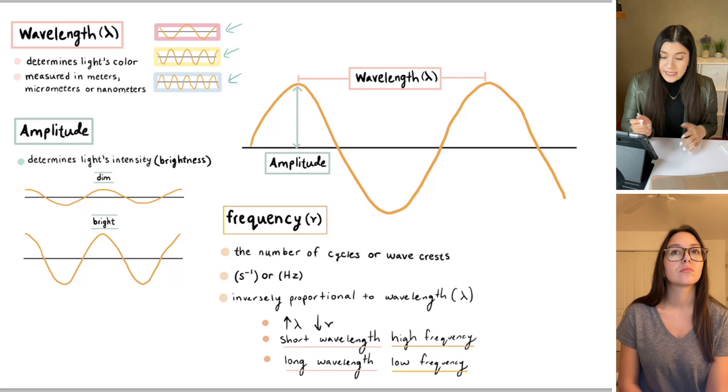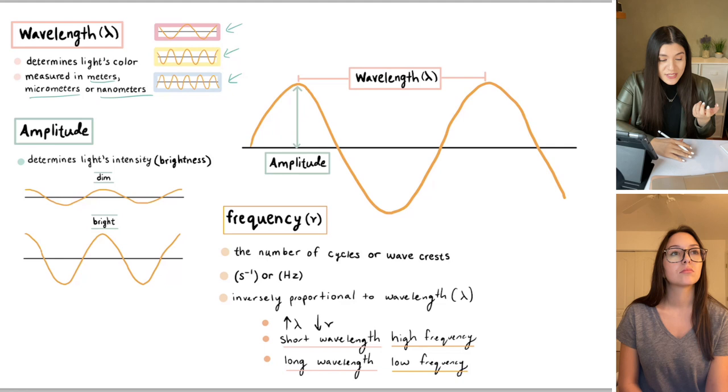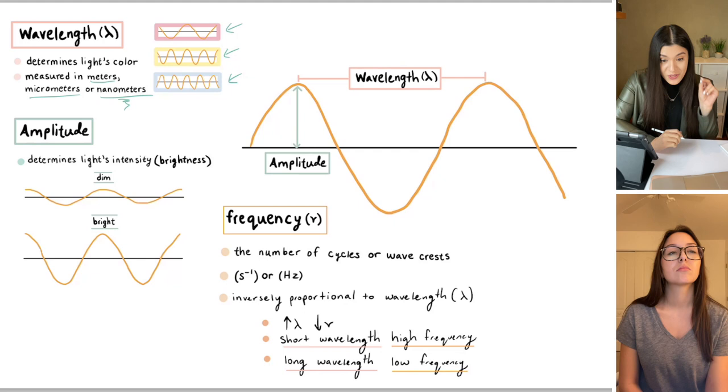Something to note here for wavelength, the different units that you're going to see is meters, micrometers, and nanometers. The most common one that most tests will actually have you put the answer in is going to be nanometers. So just a huge hint right there that wavelength needs to typically be in nanometers unless they specify that they want it in meters or something else.